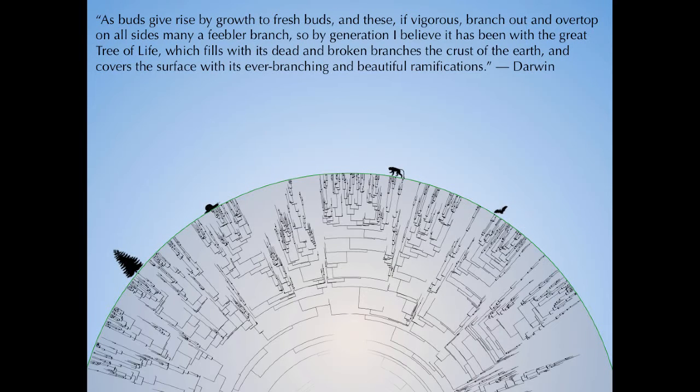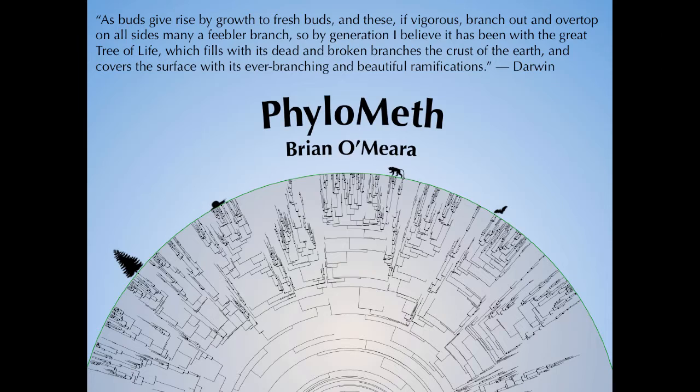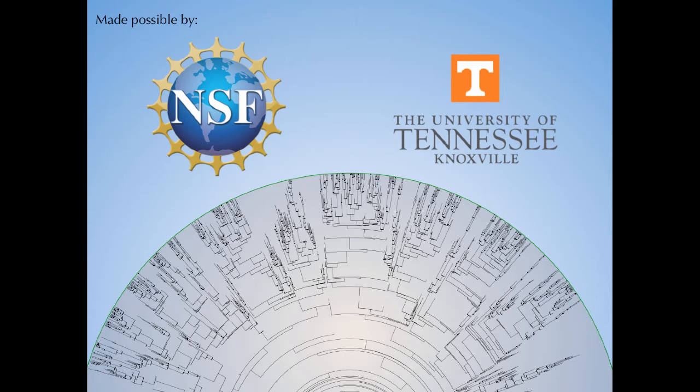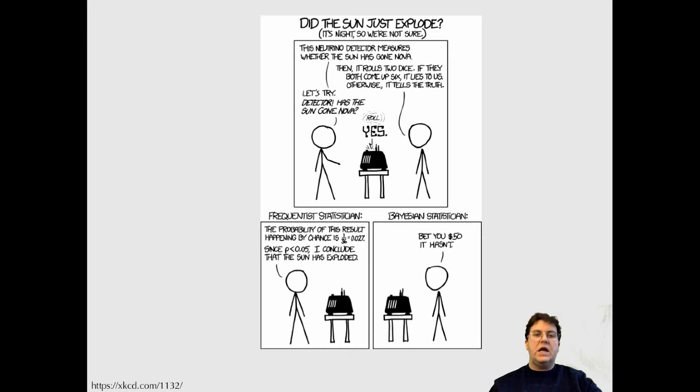Ever since Darwin, biologists have understood the importance of the tree of life metaphor. In phylo-myth, we will learn how to infer that tree and how to use it to understand biological processes. Phylo-myth is made possible through a career grant from NSF as well as ongoing support from the University of Tennessee, Knoxville. Today we can talk about the differences between Bayesian and frequentist inferences in a general way. We'll get into phylogenetics later.